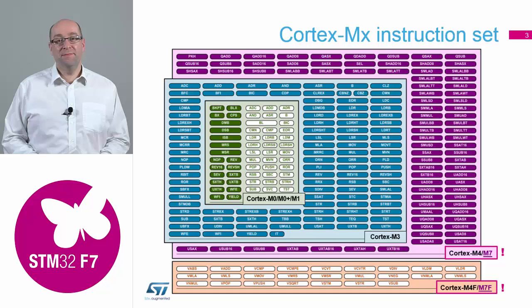Looking at the instruction set for the Cortex-M cores: the M0 and M0+ have the smallest instruction set, built mostly from 16-bit instructions of the Thumb2 architecture. As you move out to the Cortex-M3, you gain many more instructions in the 32-bit arena. Moving further out to the Cortex-M4, you gain all the new DSP instructions — that was the key difference between the M3 and M4. Then there are the optional floating point features with dedicated instructions for floating point mathematical calculations.